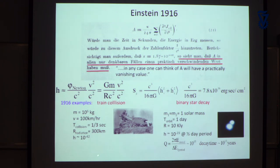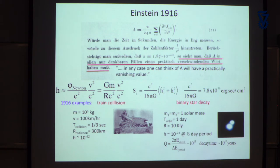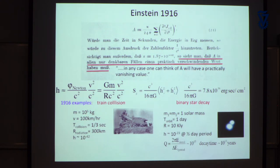Let's take two trains colliding — that's what Einstein might have been able to compute in 1915. Massive trains at about 10⁵ kilograms moving at 100 kilometers per hour, collision taking a third of a second, at a distance of one wavelength away. You put that into the relationship and you wind up with a number that is truly hopeless: 10⁻⁴².